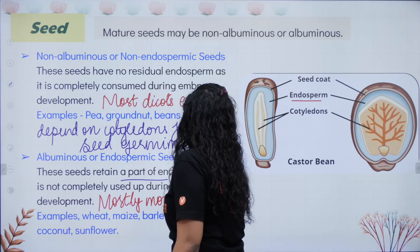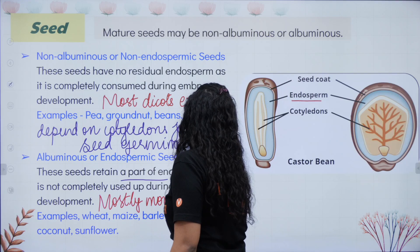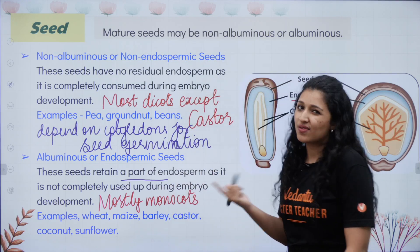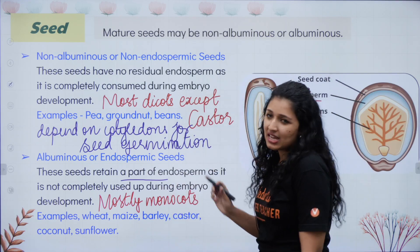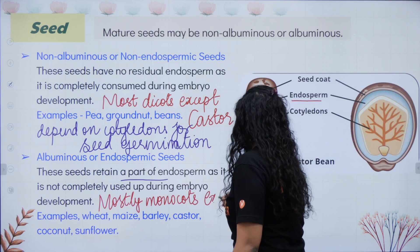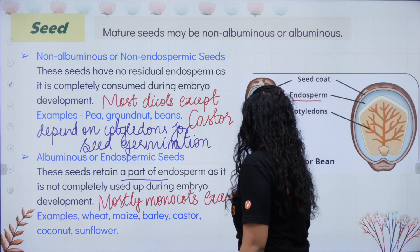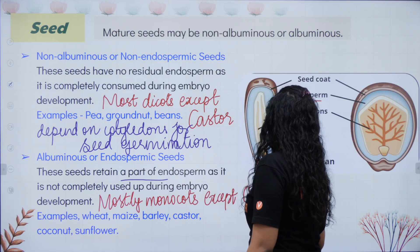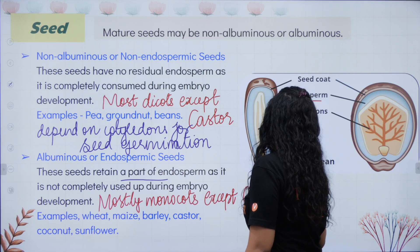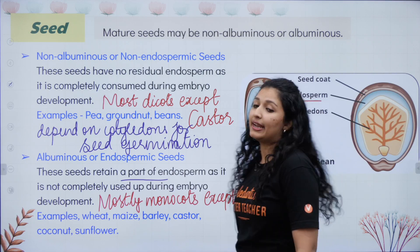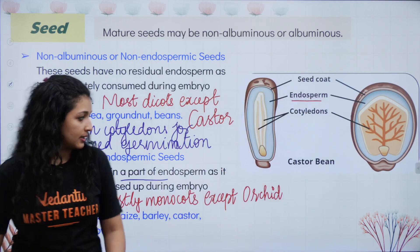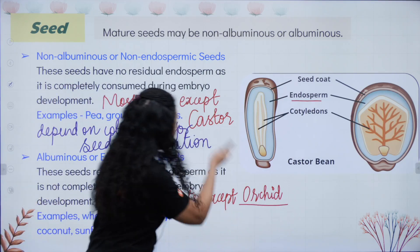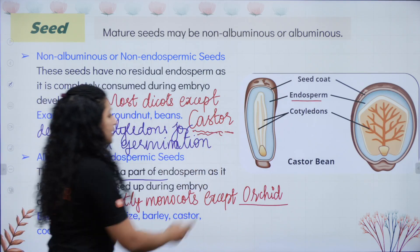In monocots, the cotyledon is not used for food storage; they are not non-endospermic. They rely on the endosperm. The exception here is orchid — orchids will not have endosperm. So orchid is the exception among monocots, and castor is the exception among dicots.